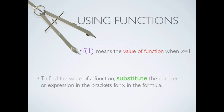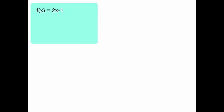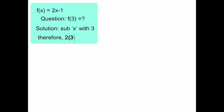Find the value of the function. Substitute the number or expression in the brackets for x in the formula. For f of x equals to 2x minus 1, what's f of 3? Substitute x with 3, and therefore f of 3 equals to 5.